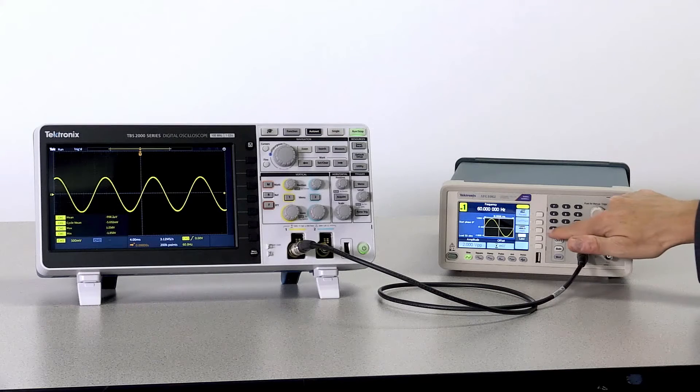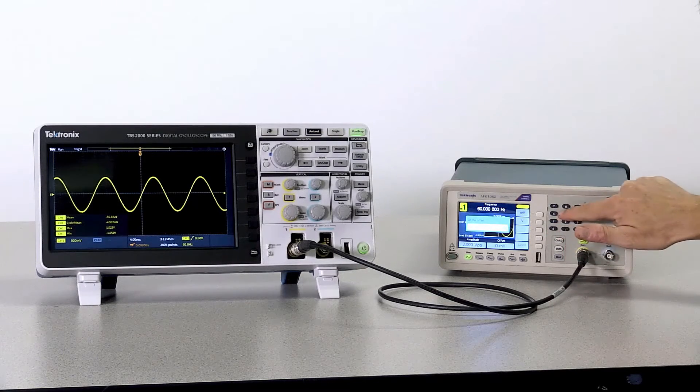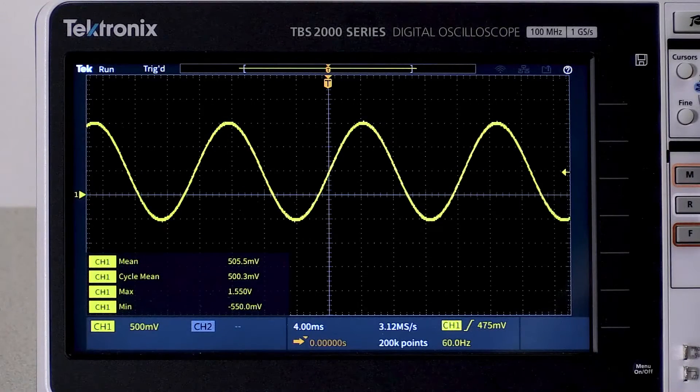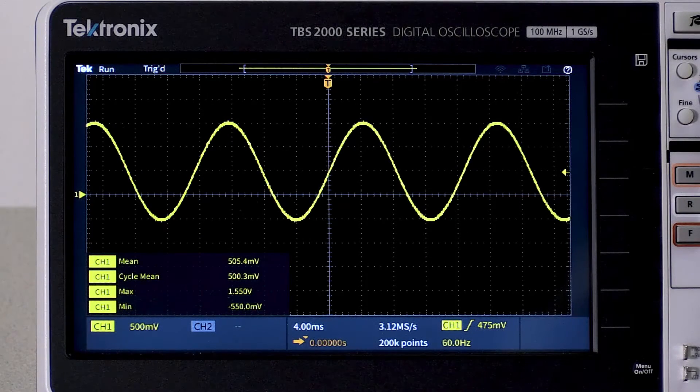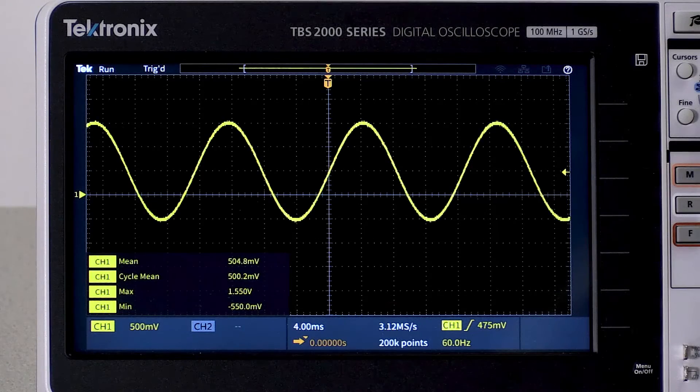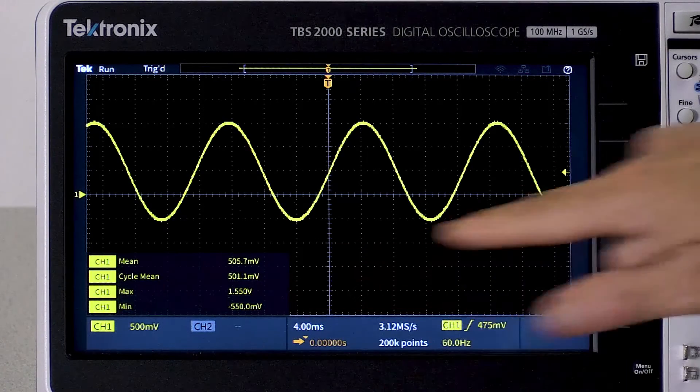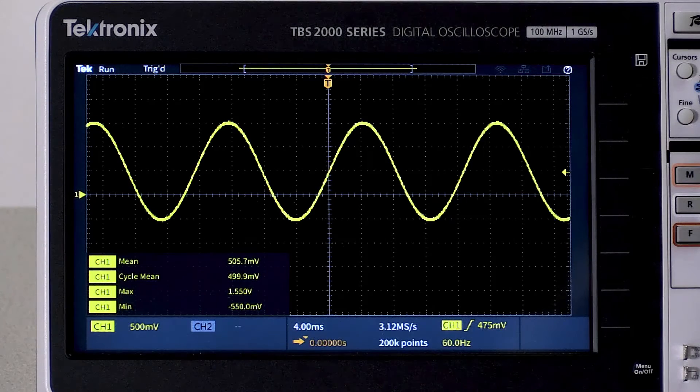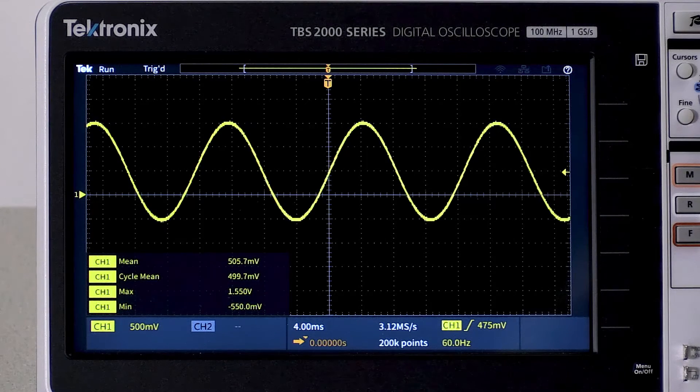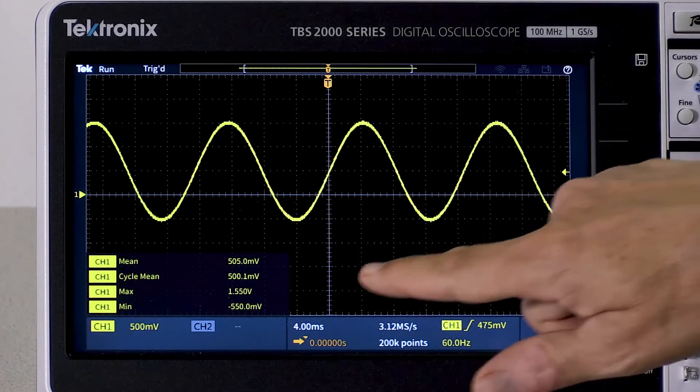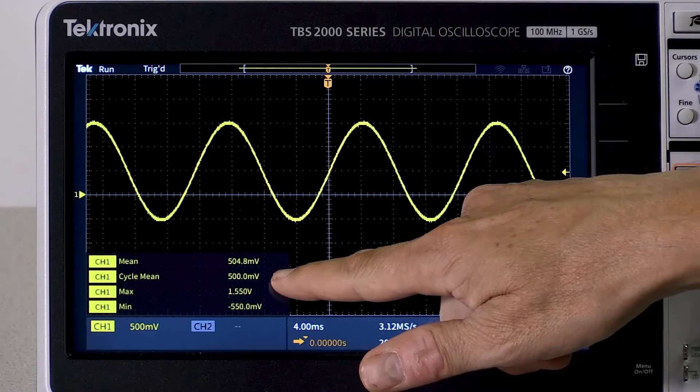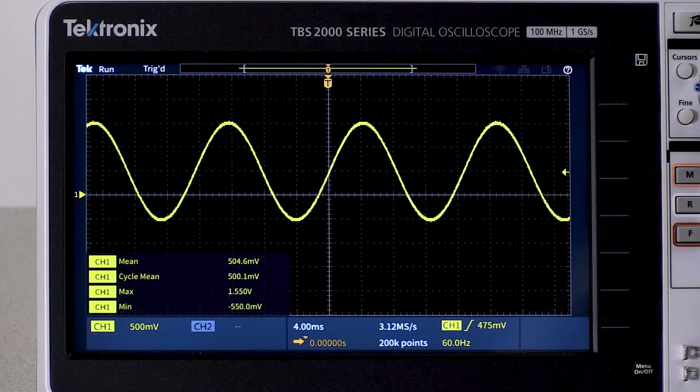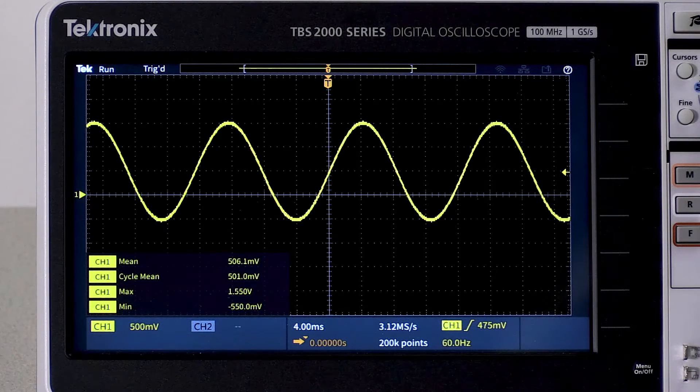I'm going to add half a volt of DC offset on the function generator. Now the measurements of max and min have different absolute values. When the input signal has a DC offset, you can use the mean measurement to measure the size of the offset. Here it's about 500 millivolts, which is exactly what I dialed in. So the mean value measurement comes in handy when you're quantifying offset.